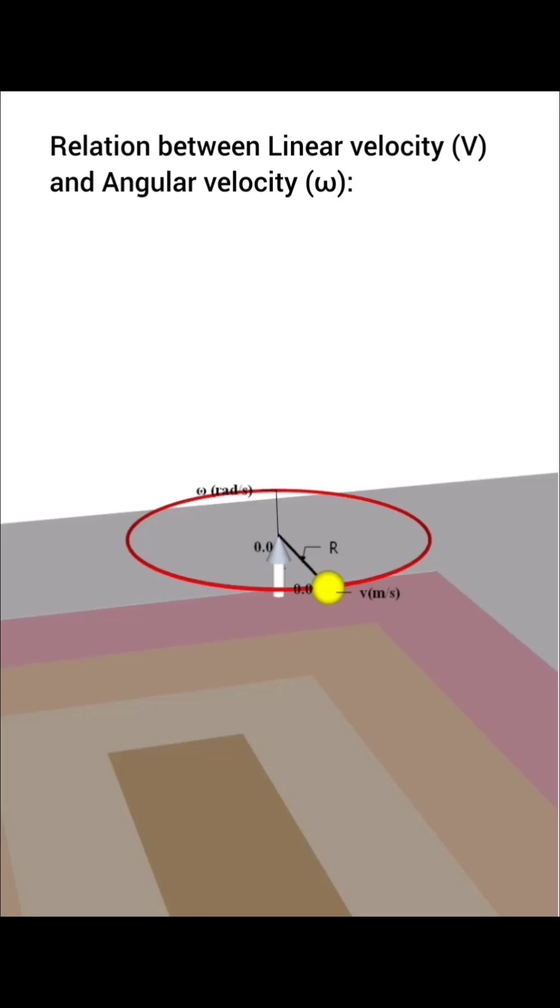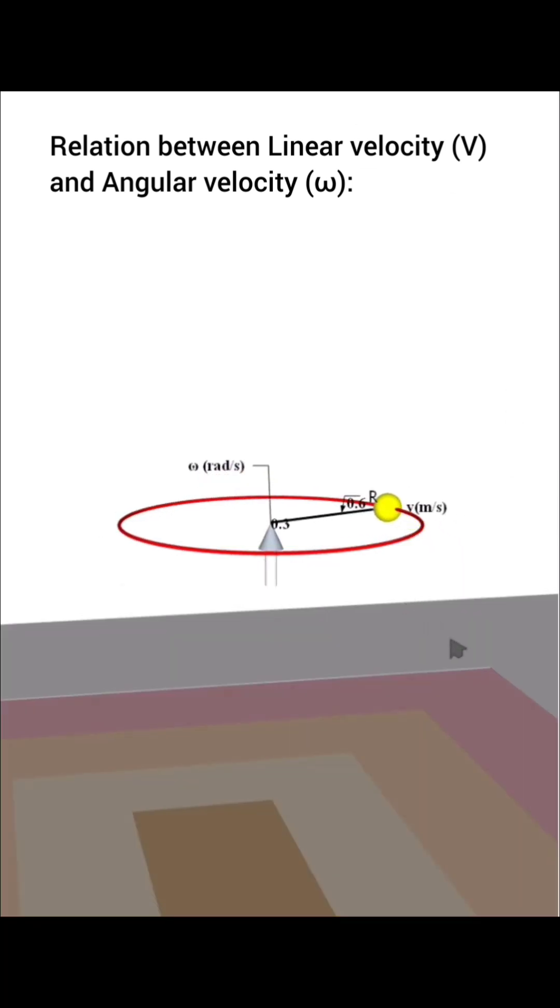Here we have an object that performs non-uniform circular motion. It has linear velocity along the circumference of the circle and angular velocity with respect to the center of the circle.